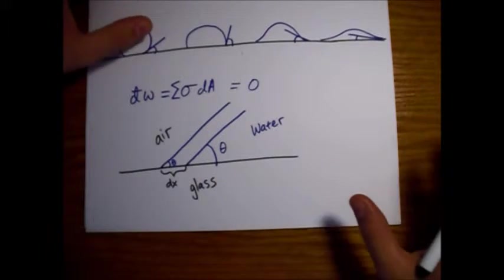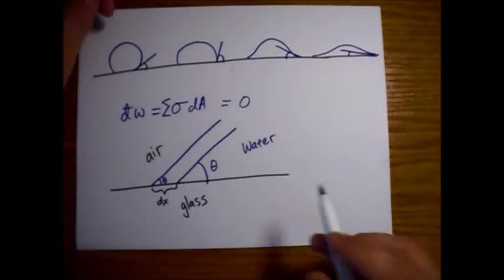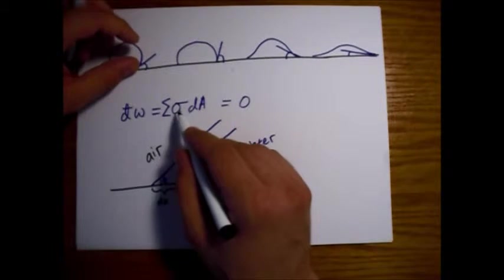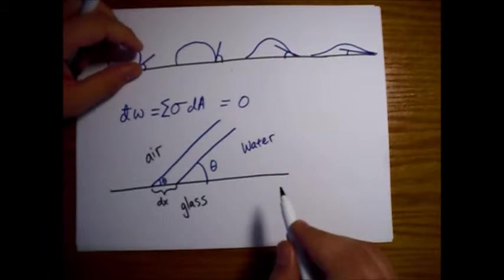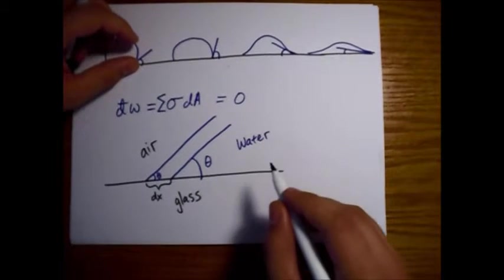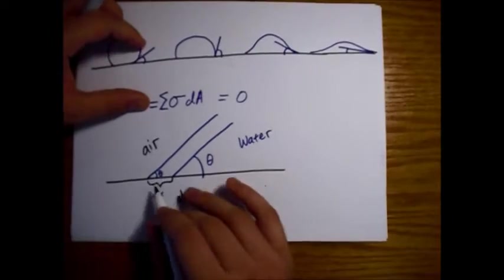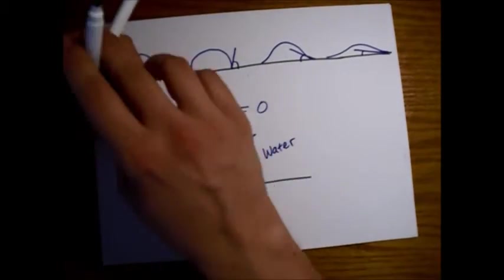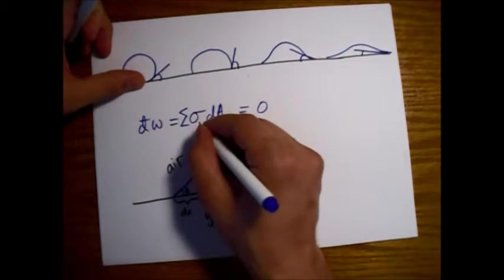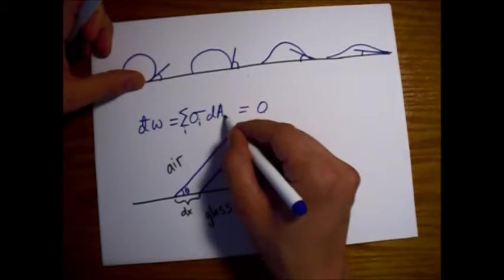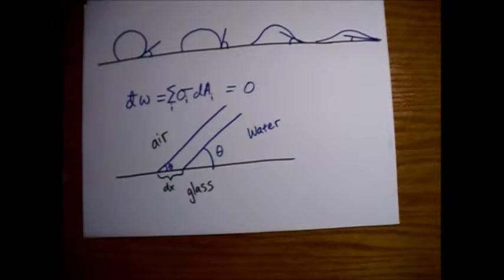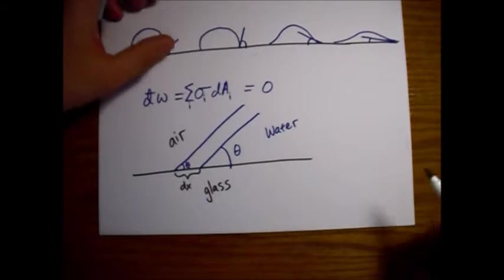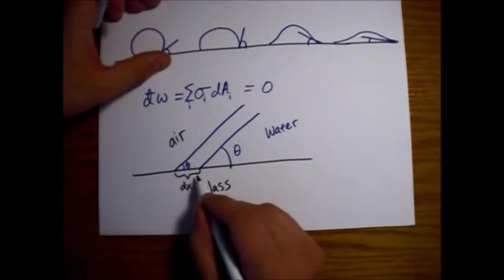Alright. So, this dx is the infinitesimal change in our system that we're going to use. Alright. So, this is all a little bit confusing so far. But, hopefully it becomes clear.